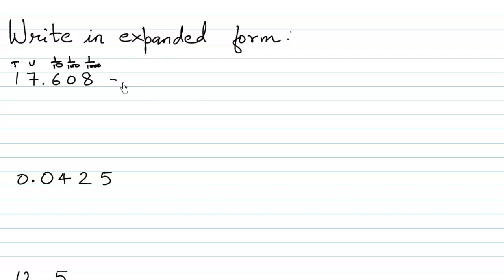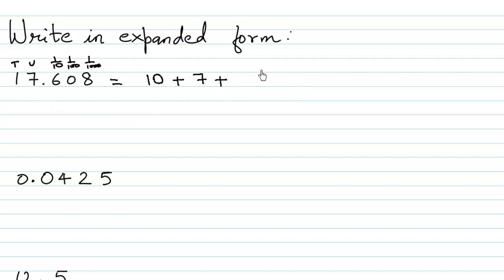So we can write this number as: since 1 is written under the tens place, we can write this as 1 ten, which is 10. Then since 7 is written under the units place, this can be written as 7. Then we have the decimal point, and 6 is written under the tenths place, so this can be written as 6 over 10.